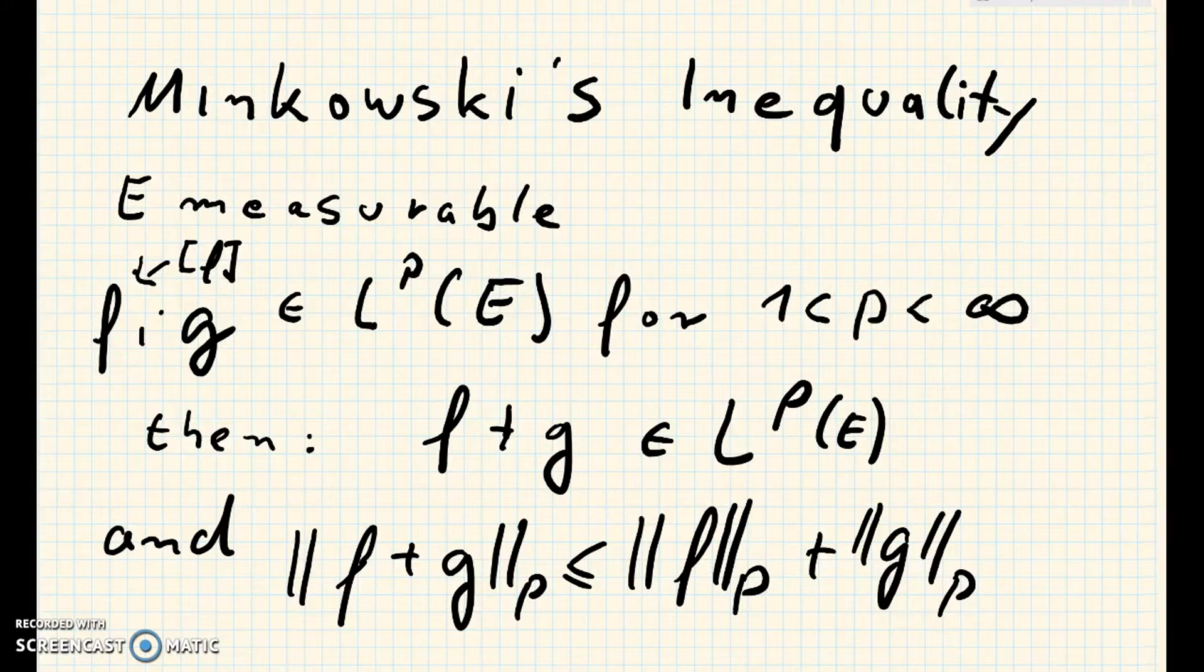Let E be measurable and let f and g be elements of LP where p is greater than 1 and smaller than infinity. Then we have that the sum f plus g is in LP again, and we have that the norm of the sum is less than or equal to the sum of the norms.